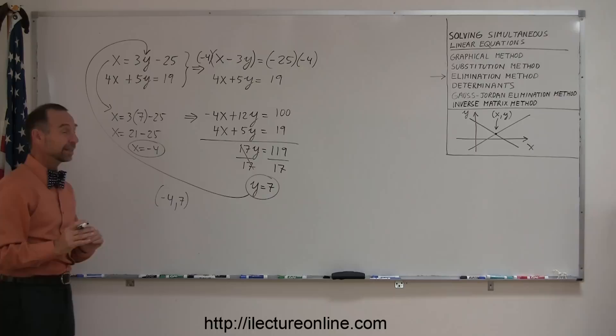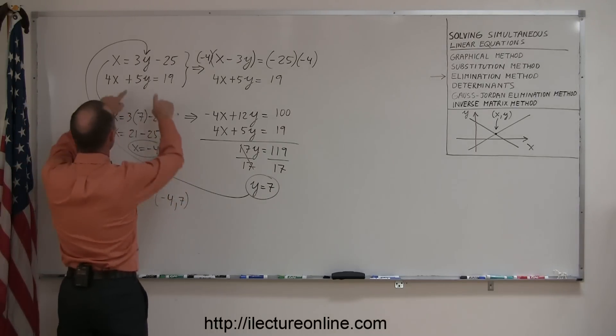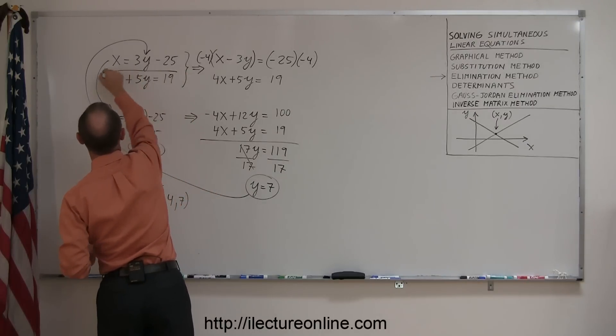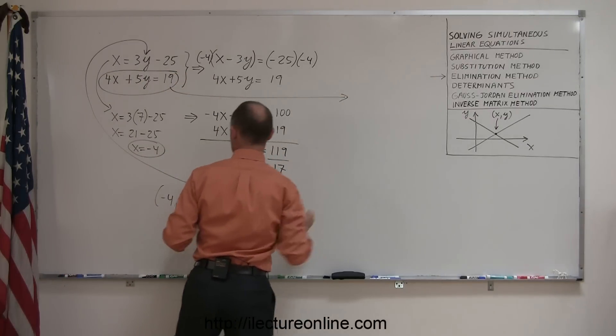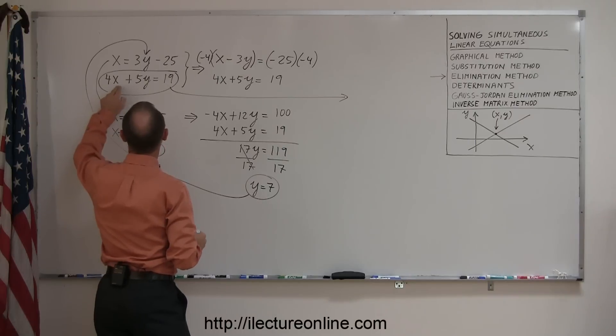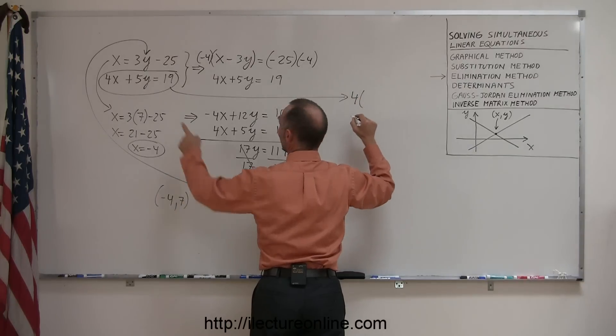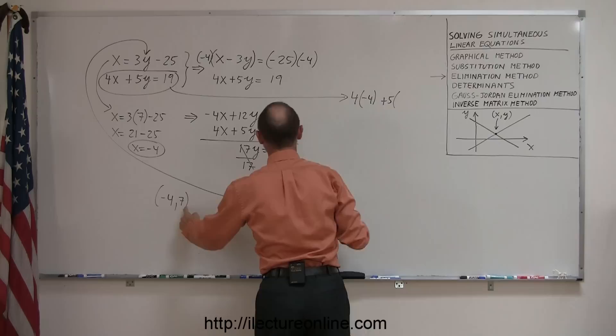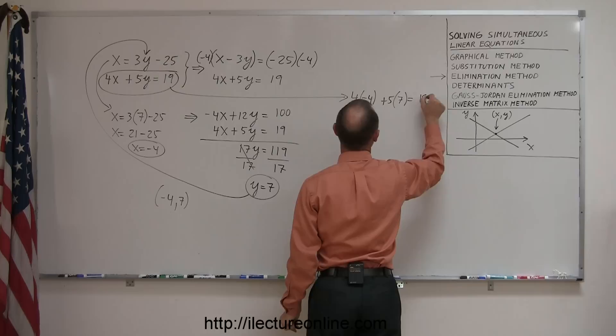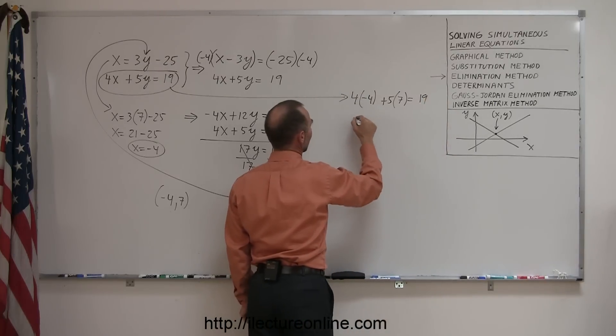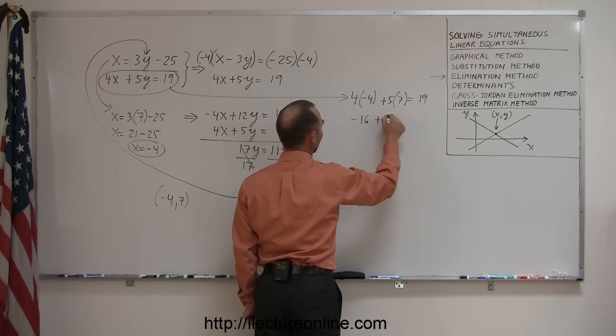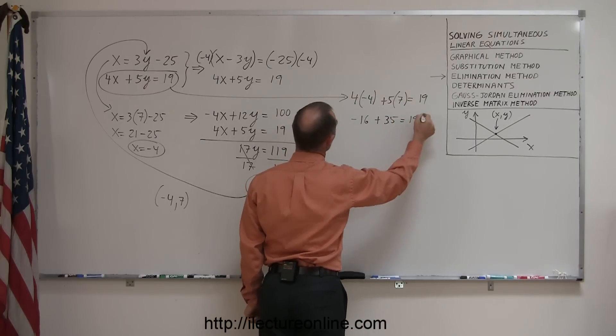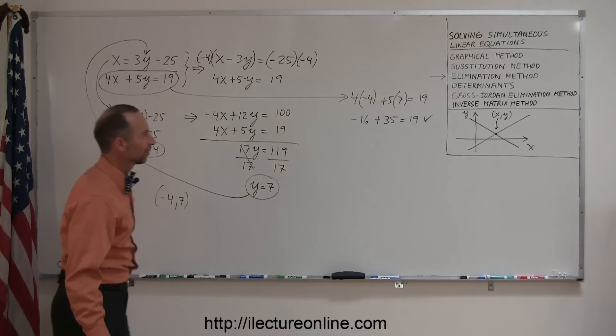And just to make sure I did this correctly, let's plug these two values into the other equation to see if that equation still holds. So I'm going to take the second equation and plug the x and y values in for x and y. So here I get 4 times x is negative 4 plus 5 times y is 7, and that should add up to 19. 4 times negative 4 is minus 16, 5 times 7 is plus 35. And is that indeed equal to 19? Well, 35 minus 16, yes indeed. So that's the correct solution.